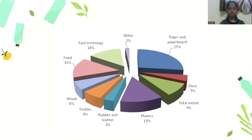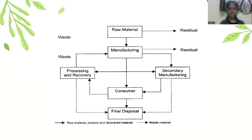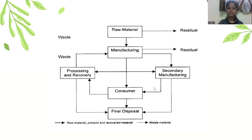These are the different compositions of waste and how waste generation works. Raw materials arrive at the manufacturing site where residual solid or semi-solid materials undergo processing and recovery if further use can be extracted. Then it goes to secondary manufacturing. From manufacturing, it can go directly to the consumer if no processing and recovery is needed; otherwise it goes through those steps or secondary manufacturing before being consumed, and ultimately sent to disposal sites.